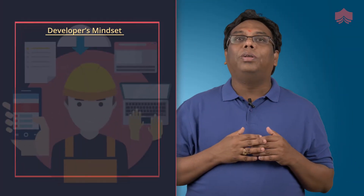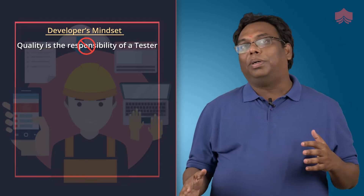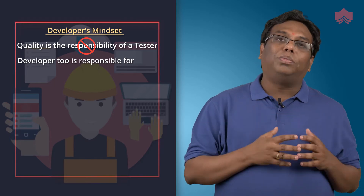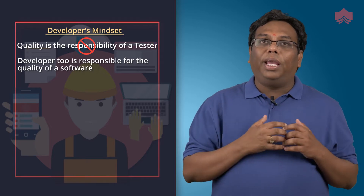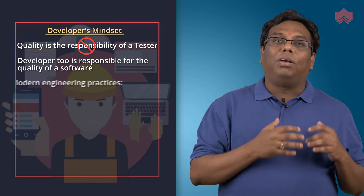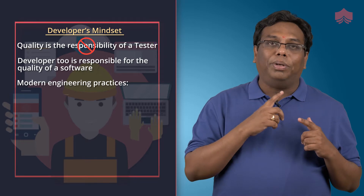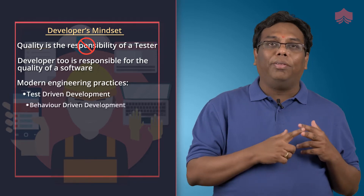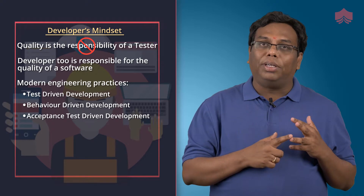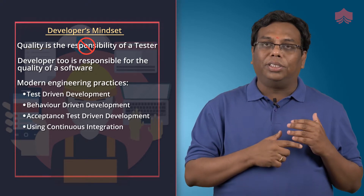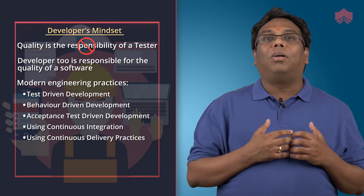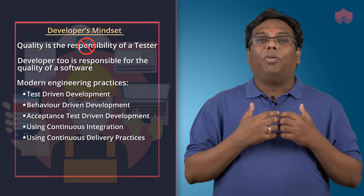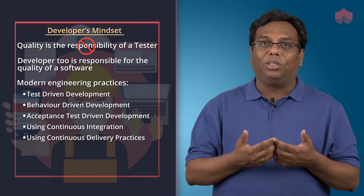From the developer's point of view, gone are the days where quality was only the responsibility of the tester. Now the developer is also responsible towards the quality of the software. That's where you have to learn modern engineering practices, for example, test-driven development, behavior-driven development, acceptance test-driven development, using continuous integration and continuous delivery practices. All these practices are really required for producing working software iteration on iteration.